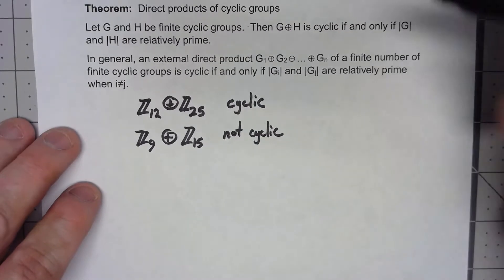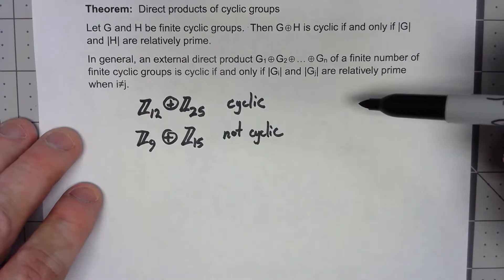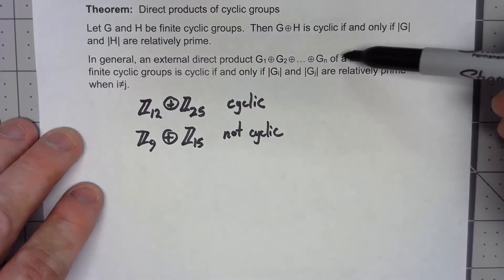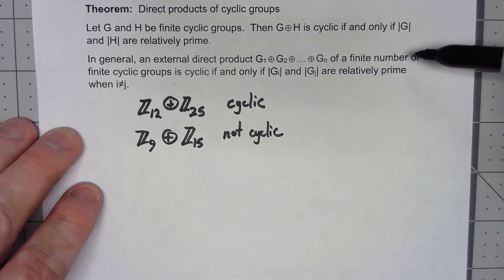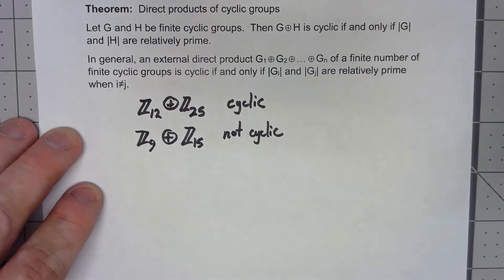We can, in fact, even generalize this theorem to beyond two groups to any number of groups. In general, the direct product of a bunch of finite cyclic groups will be cyclic if and only if any pair of them, the orders are relatively prime.